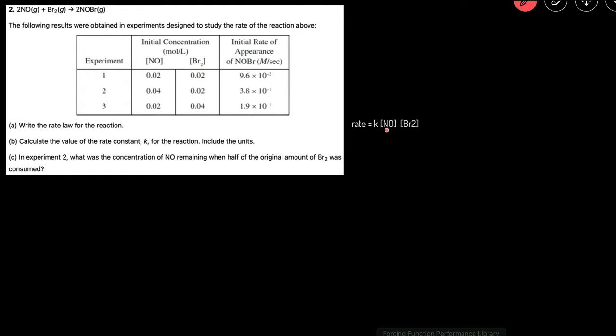So we'll start by finding the order of NO. To find the order of NO, we need to choose two experiments in which the concentration of NO changes while the concentration of Br2 stays the same. So that will be experiment 1 and 2. You can see that the NO concentration changes while the Br2 concentration stays the same.